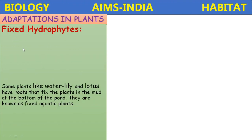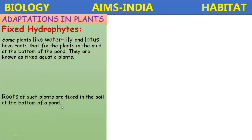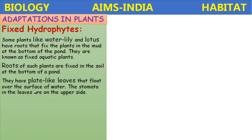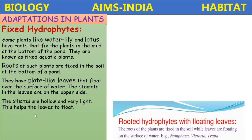Fixed hydrophytes are plants like water lily and lotus that have roots which fix the plant in the mud at the bottom. They are known as fixed aquatic plants. Their roots are fixed in the soil at the bottom of a pond. They have plate-like leaves that float over the surface of water, and the stomata in the leaves are on the upper surface.